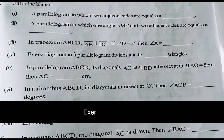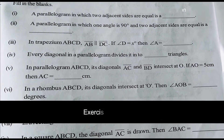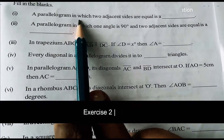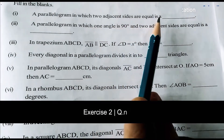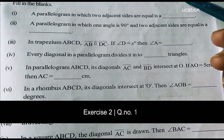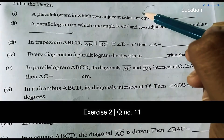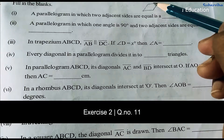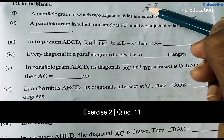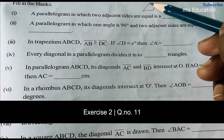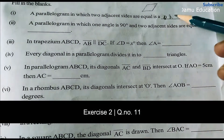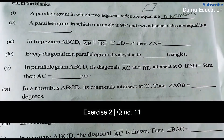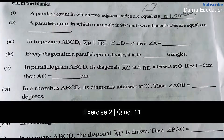Hello viewers. In this module we are going to discuss the solutions for the 11th question in Exercise 2 for quadrilaterals. The first question: a parallelogram in which two adjacent sides are equal. In a parallelogram, if two adjacent sides are equal, it will become a rhombus.